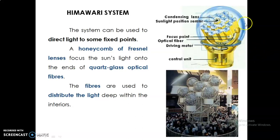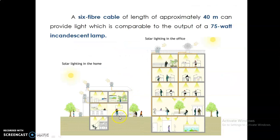In the Himawari system setup, many lenses are installed together and can also be installed individually. In comparison, for a small-scale residential area versus a large-scale office area, 6 fiber cables of 40-meter length can light an indoor area equivalent to a 75-watt incandescent lamp. This system can be installed anywhere to get very good lighting.